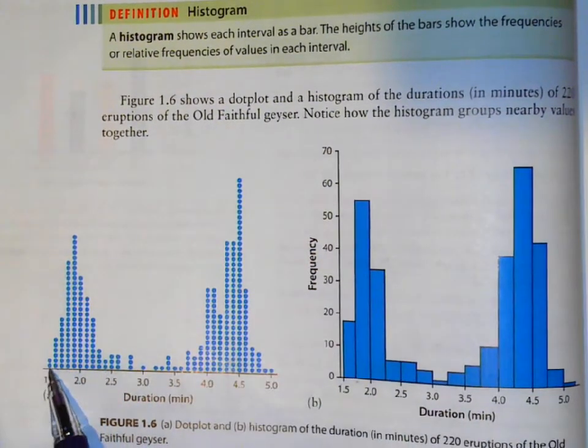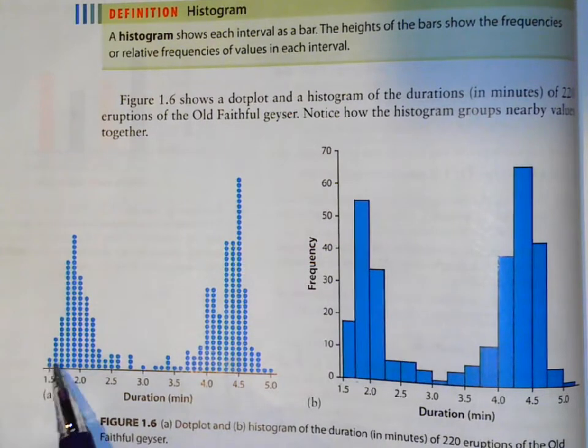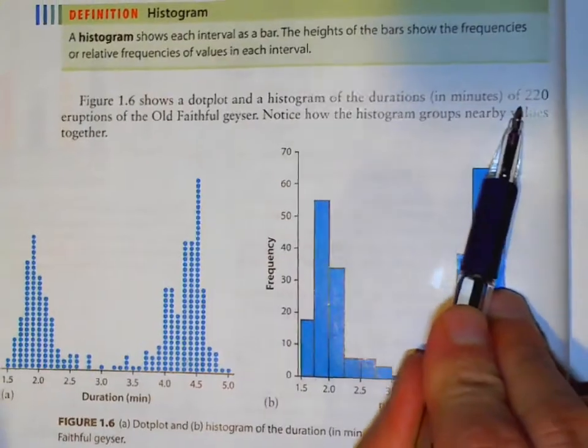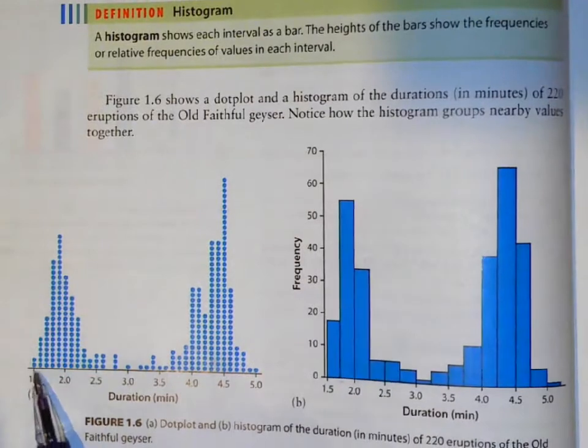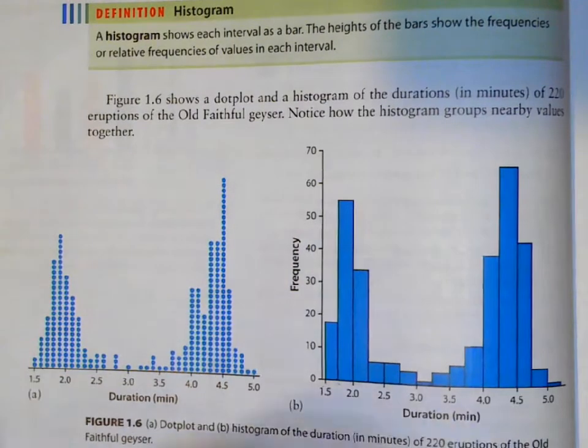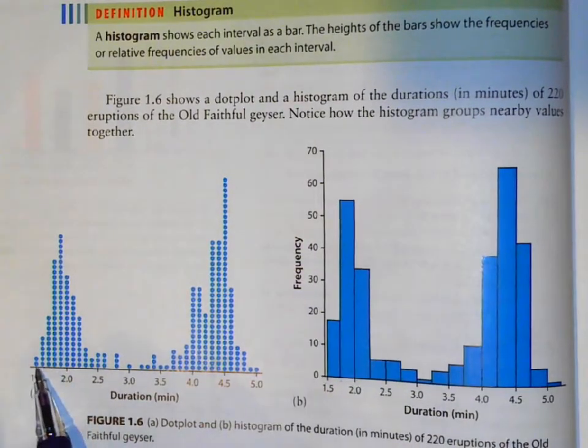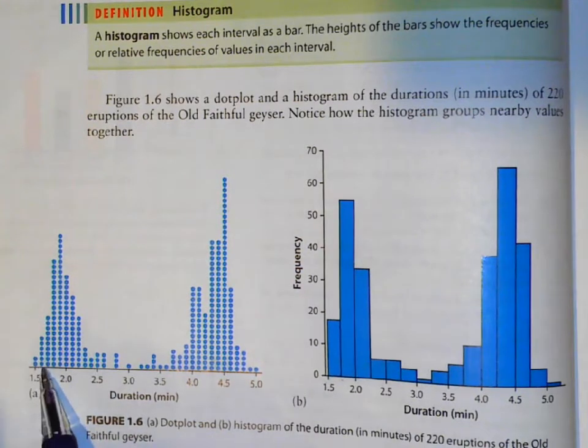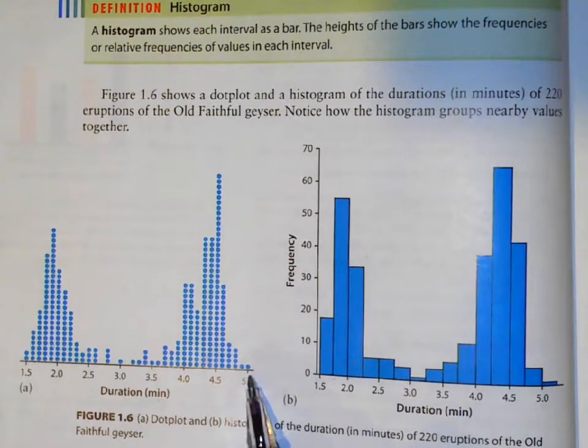So this says that out of 220 eruptions, the water sprouting happened 1.5 minutes, 1.6 minutes, 1.7 minutes, and so on, all the way up here to five minutes in length.